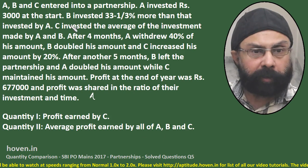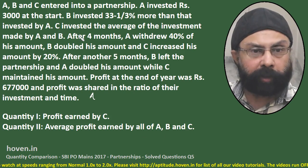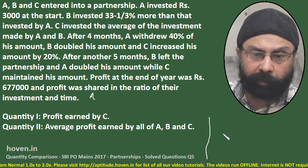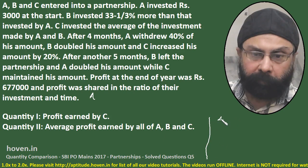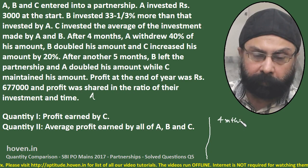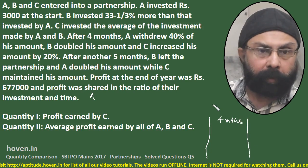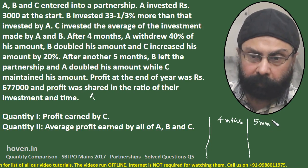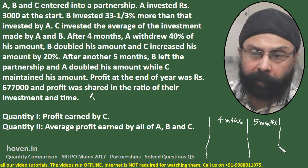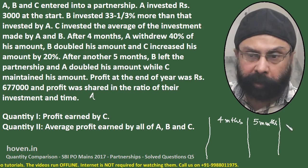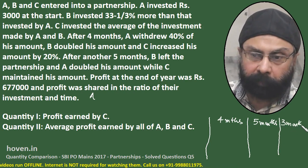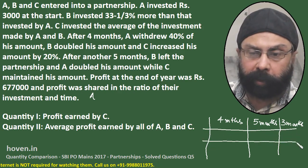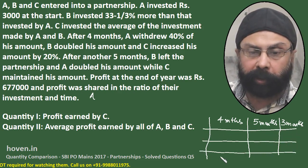The first investment continued for how much? For 4 months. We can draw a sort of table: 4 months, then 5 months, and then something happened after 5 months. And then nothing happened till the end of the year — the last 3 months.